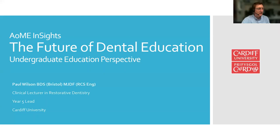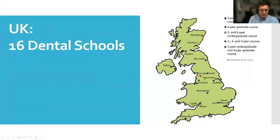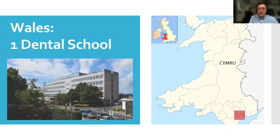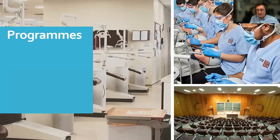Thank you very much, Alison, for a very kind introduction. I wanted to talk about the future of dental education from an undergraduate perspective. For those in the audience unfamiliar with dental education, there are 16 dental schools in the UK, spread fairly evenly across the country. In Wales, there is only one dental school here in Cardiff, so we have a particular duty to the Welsh nation. We offer three undergraduate programmes: a Bachelor of Dental Surgery, a Diploma in Dental Hygiene, and a BSc in Dental Therapy and Dental Hygiene.